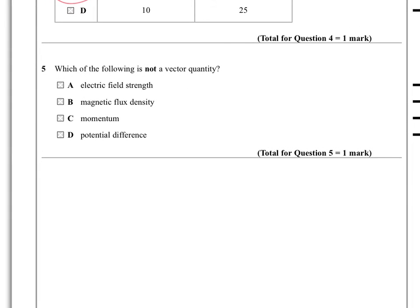Question 5 then. Which of the following is not a vector quantity? Okay, so electric field strength, well, it always has a direction based on the way a positive charge would be pushed. Magnetic flux density, well, it has a direction based on the way a north pole would be pushed. Momentum has a direction based on the velocity.